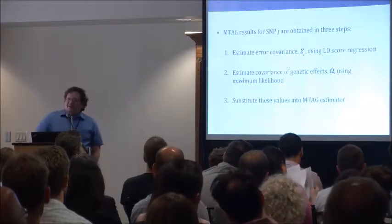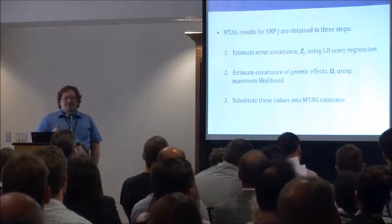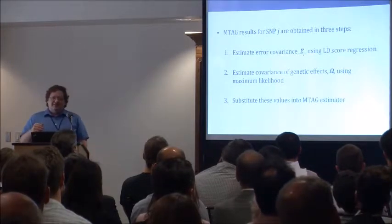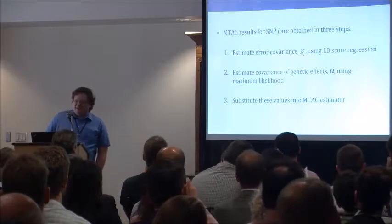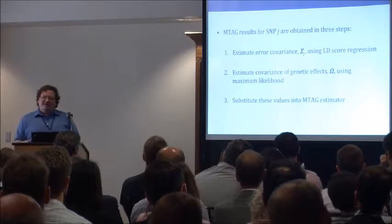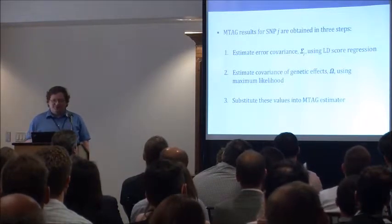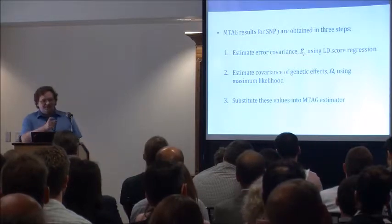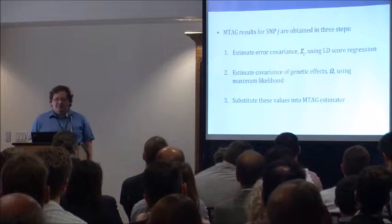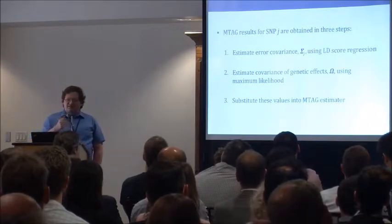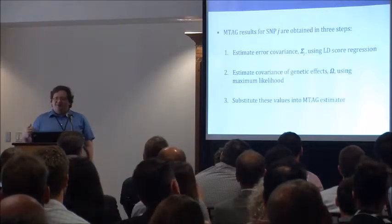Those are the pieces that go into the estimator. To actually accomplish the estimation, it's somewhat stepwise. The key starting point is that we can directly estimate the sigma matrix — the correlated estimation error that may incorporate sample overlap and reflect similarity of confounding effects — by using the intercept out of LD score regression. It turns out that sigma is directly what drops out as the intercept term from doing LD score regressions for pairs of traits. Once we have that estimate, we can estimate the omega matrix — the covariance of the genetic effects — via maximum likelihood or method of moments. Those two matrices along with the GWAS betas go into the formula to get our MTAG estimate of beta.